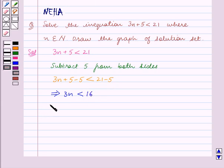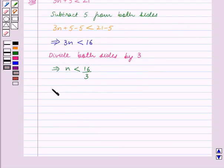Now we divide both sides by 3. We get n is less than 16 by 3. This implies n is less than 5.33.